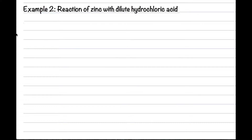Let's try another example: the reaction of zinc with dilute hydrochloric acid. If you have studied the chapter on acids and bases you would know what the products are; otherwise the products will be given in the question. When zinc reacts with dilute hydrochloric acid it forms the salt zinc chloride and hydrogen gas is evolved.